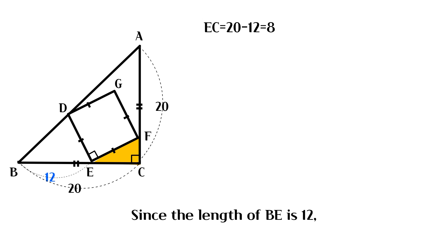Since the length of BE is 12, the length of EC is 8. To find the area of triangle FEC, we need to find the length of FC.